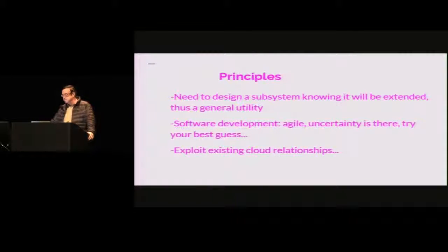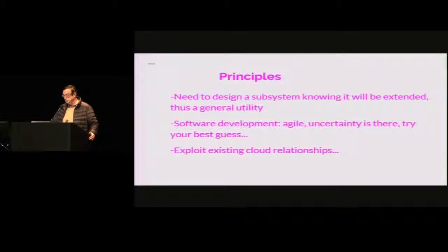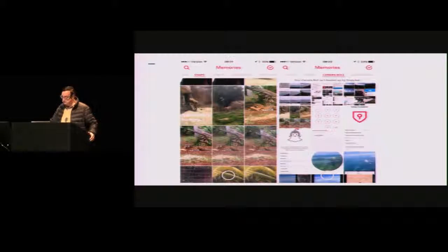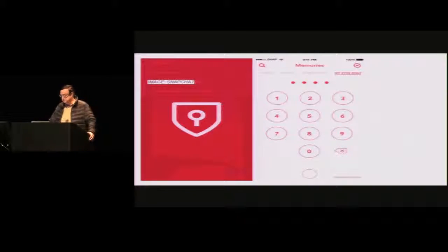So we needed to design a subsystem, knowing that extensions are coming. We didn't even know the extension was going to be external glasses at some point — then we learned we had to work on the security of these glasses called Spectacles. The development has to be agile for future extensions, and we need to exploit existing cloud relationships. This is how Memories looks: you can view your snaps, your stories, your camera roll, and so on.